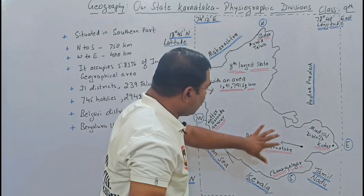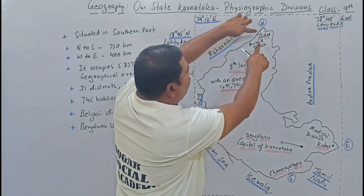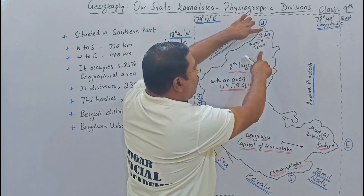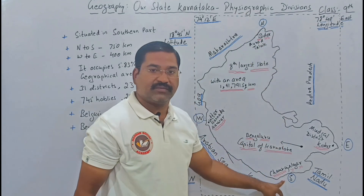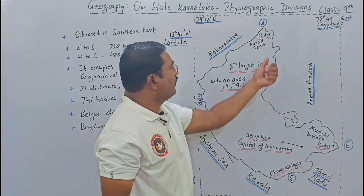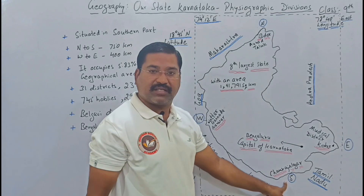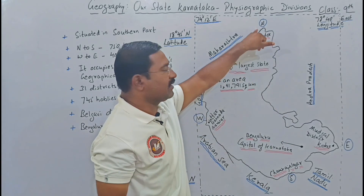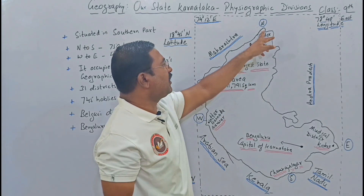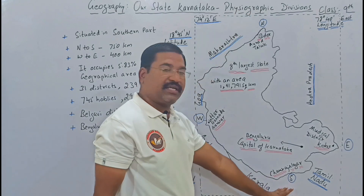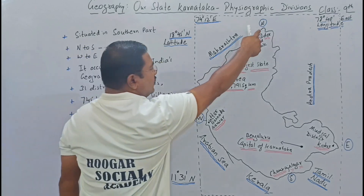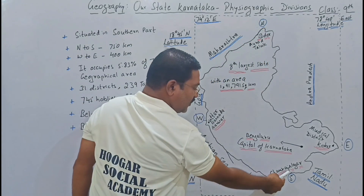If we talk about the stretch of Karnataka, from the northern tip at Bidar's Aurat Taluk to the southern tip at Chamarajanagar, the north-to-south distance is 750 kilometers. Aurat Taluk is the northern tip and Chamarajanagar is the southern tip. So from north to south, Karnataka stretches 750 kilometers.